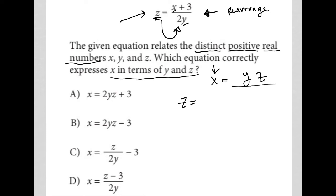So I have z equals x plus 3 divided by 2y. I want to get x by itself, so I'm going to multiply both sides by 2y. That cancels out the 2y on the right-hand side. That leaves me with 2yz equals x plus 3.